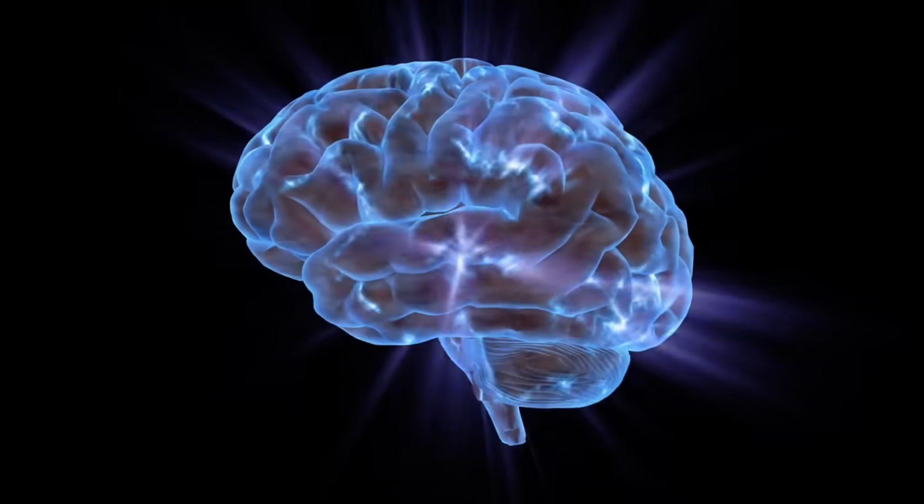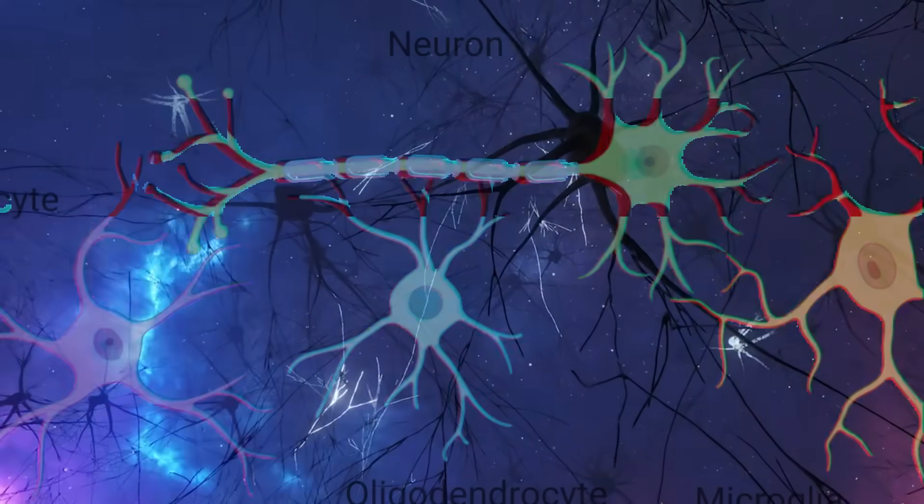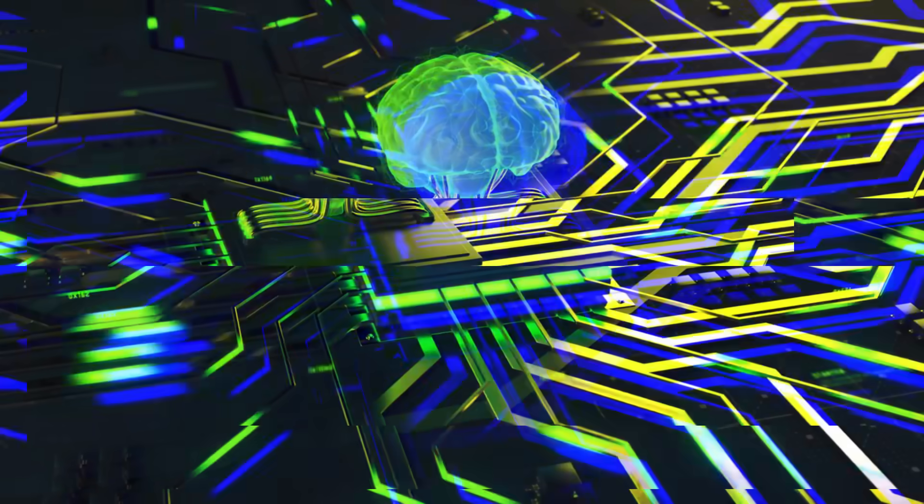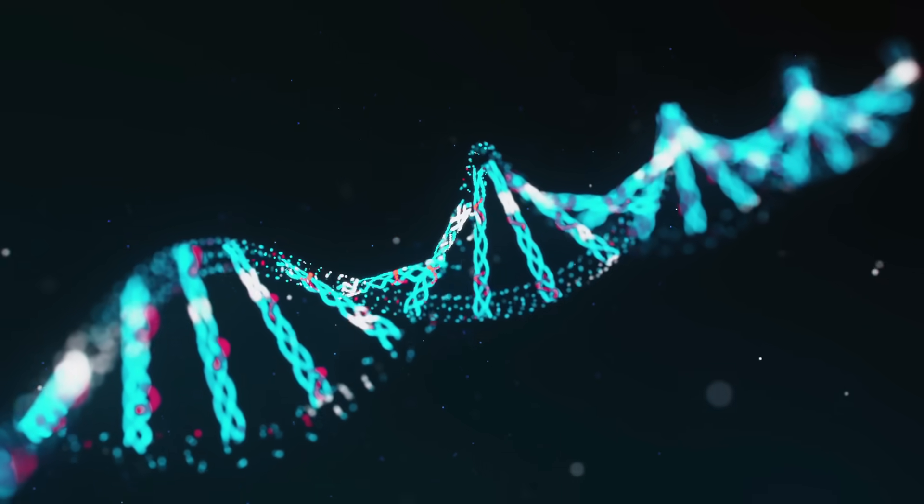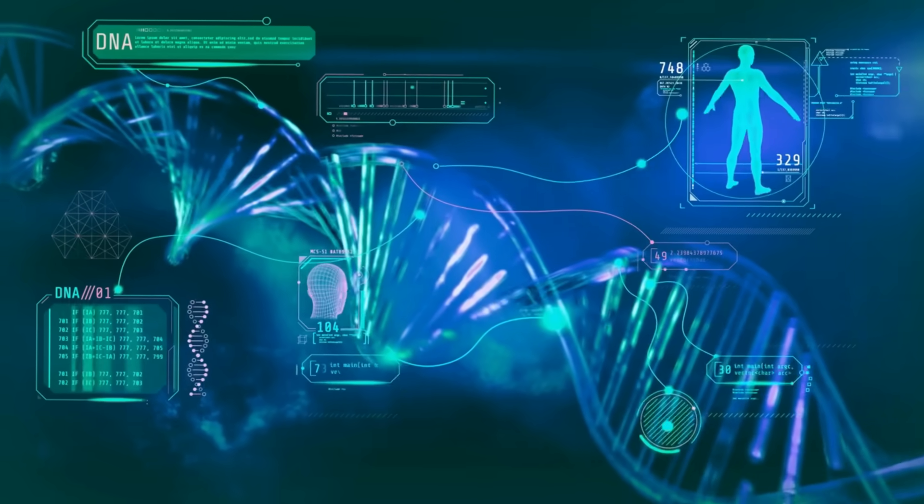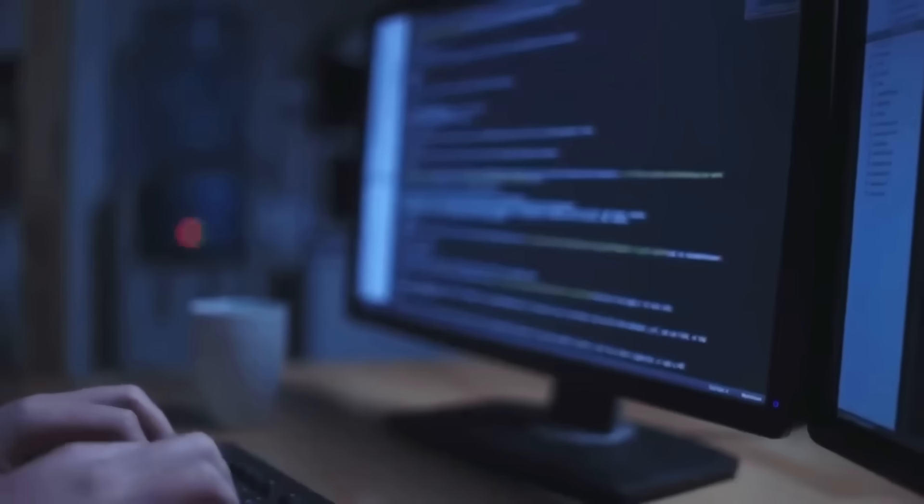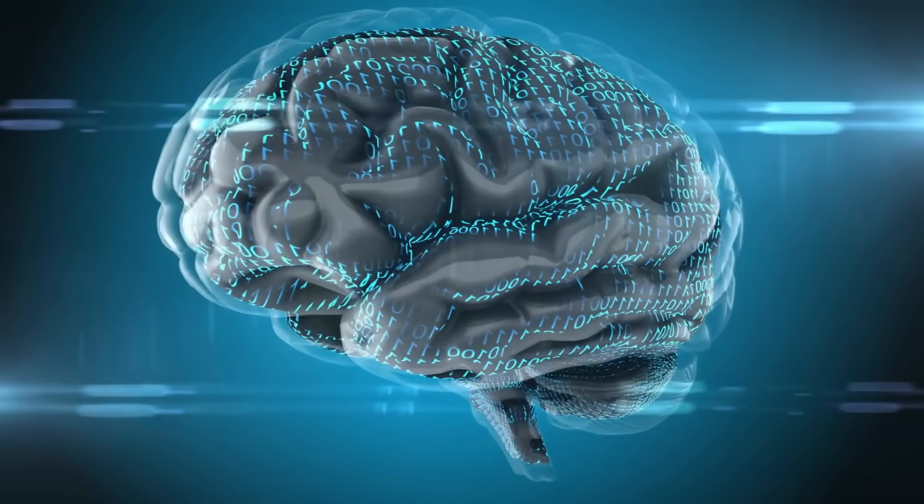In a groundbreaking theoretical experiment, researchers have used quantum AI to create a digital twin, a fully simulated model of a human brain, pushing the limits of what we believe is possible in neuroscience. This article delves into every facet of this fascinating conceptual simulation, exploring its implications for science, ethics, and the future of digital consciousness.